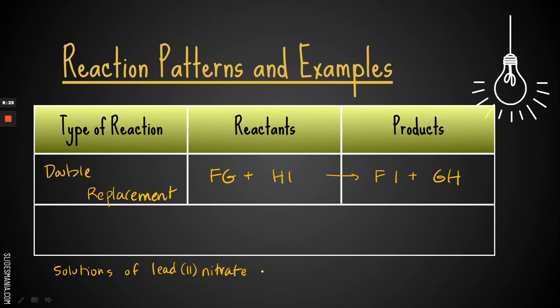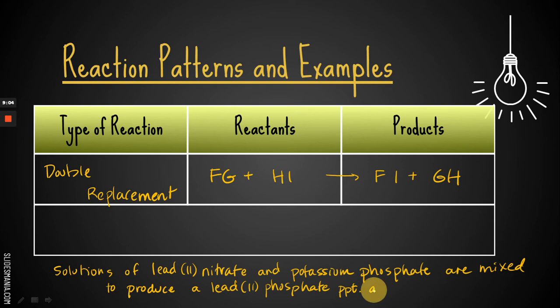But here we go. Solutions of lead to nitrate and potassium phosphate are mixed to produce, so that's my arrow, right? And then my products, so to produce lead to phosphate precipitate and aqueous potassium nitrate. So you can see why we've been working on formula writing for so long because we need it to write our chemical equations. All right, so there's my sentence. Now I'm going to turn these into formulas.